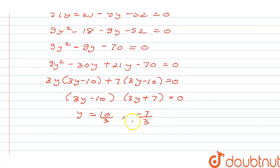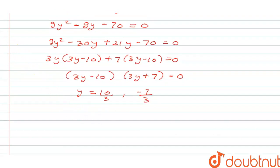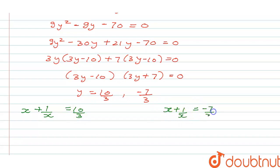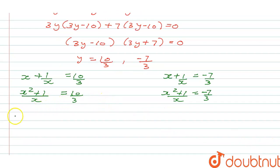We obtained y equals 10/3 and y equals minus 7/3, but since y was substituted in place of x plus 1 by x, we now solve for x in each case. Case 1: x plus 1 by x equals 10 by 3. Taking LCM, x squared plus 1 by x equals 10 by 3. Cross-multiplying gives 3x squared plus 3 equals 10x, or 3x squared minus 10x plus 3 equals 0.